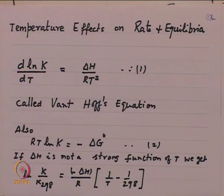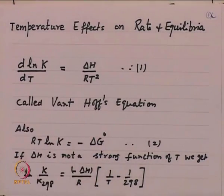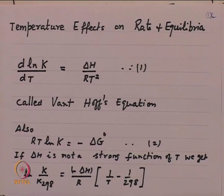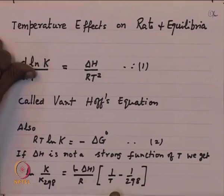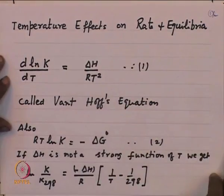We get started today. We are looking at temperature effects on rate and equilibria in this lecture. Temperature effects we try to put together by looking at Van't Hoff's equation, a celebrated equation: d ln K by dT equals delta H by RT squared. Here K is the equilibrium constant, T is temperature in Kelvin, delta H is heat of reaction, and R is the gas constant.